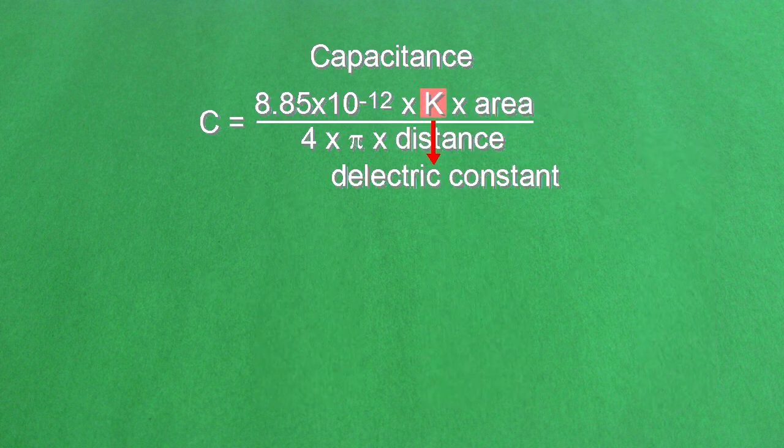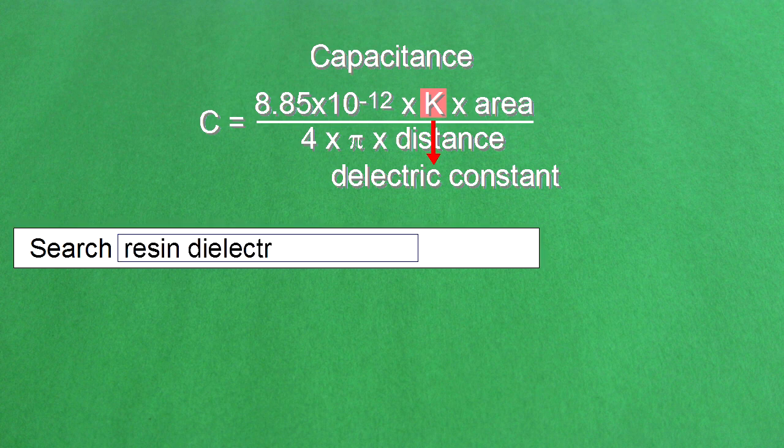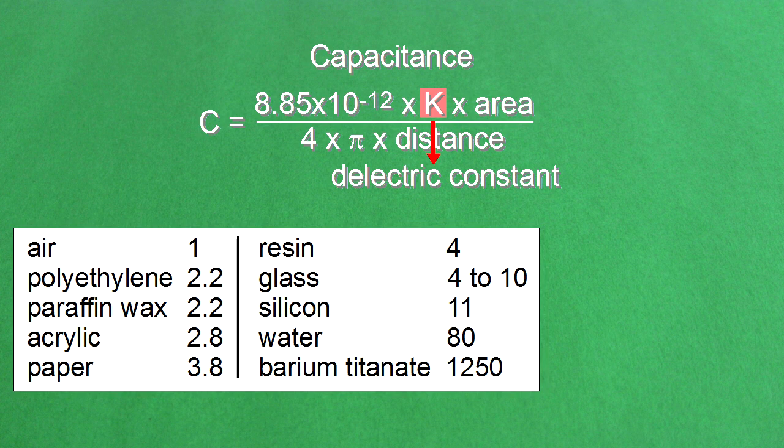The other variable is K, or the dielectric constant, and that depends on the material. I usually do a search online for the material name and dielectric constant to find it. It's usually a value from 1 to 4. It's hard to find high dielectric constant materials that you can practically use.